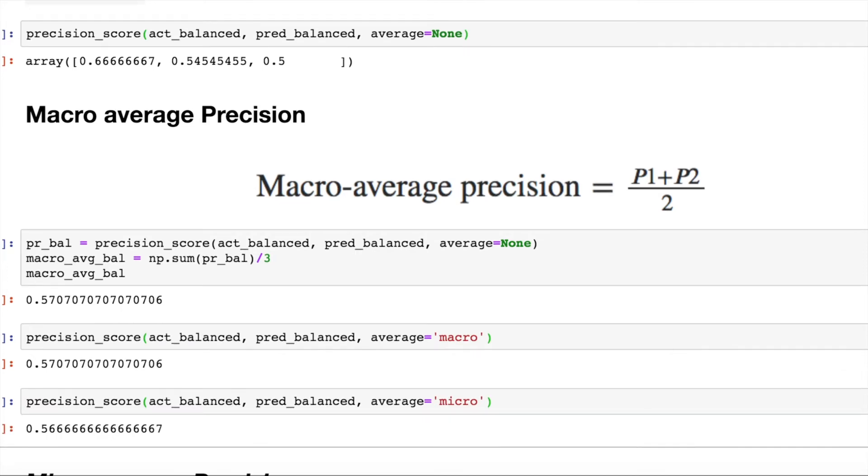Now, if you see for micro, the values are very close to the macro values. We will cover what is micro going ahead. But yeah, there is very limited difference between the micro and macro when there are balanced classes.